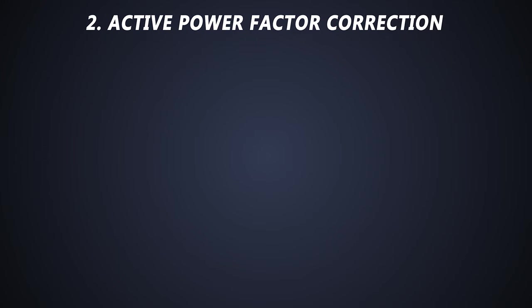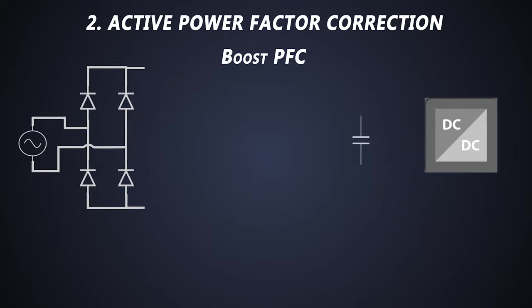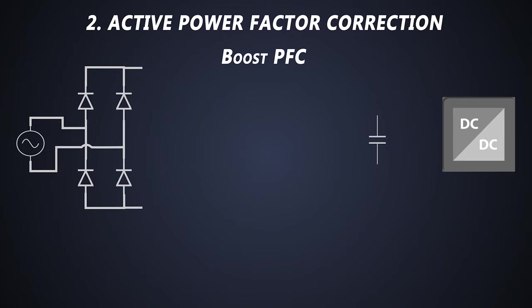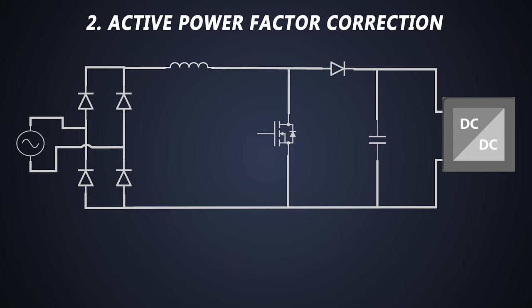The popular type of this is the boost PFC, where the boost DC to DC converter is used between rectifier and the filter capacitor. After the full bridge rectifier, the boost inductor is connected in series. Then an active switch i.e. MOSFET and a passive switch i.e. a fast switching diode is used. After the diode, a DC-link capacitor is used to filter the ripple present in the voltage.